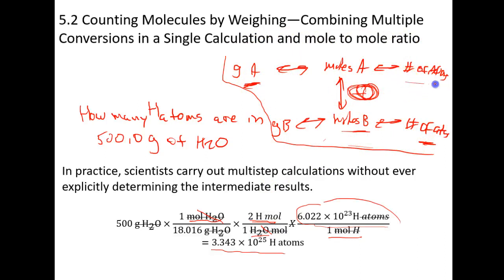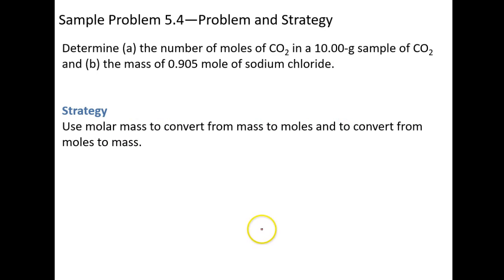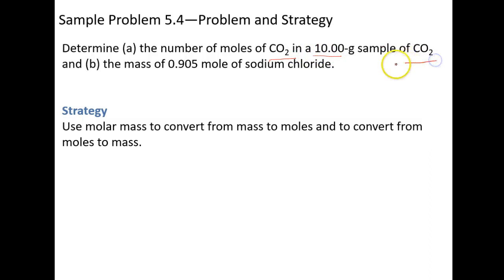The hardest part is knowing which conversion factor to use, and the flowchart helps you at least 50% of the way — you still need to know the actual numbers. Here are some practice problems. This one asks for moles of CO2 starting with 10 grams of CO2. You don't need a mole-to-mole conversion because you're finding moles of A starting with grams of A. Go ahead and pause, do these problems, and we'll do the others together.